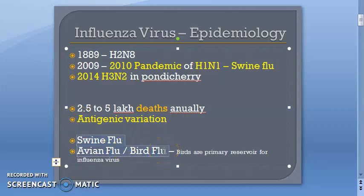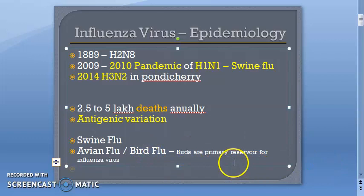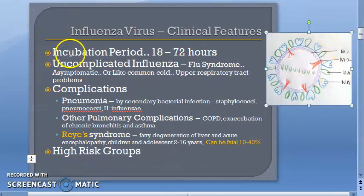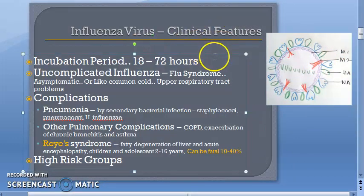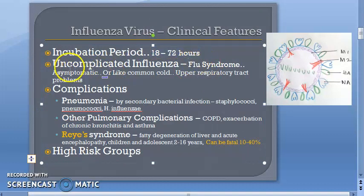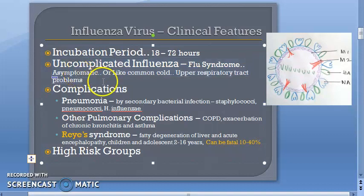Influenza virus affects swines and birds — birds are actually the primary reservoir of influenza virus. They also affect humans, but not as much. The incubation period is just a few hours to around three days — one to three days.